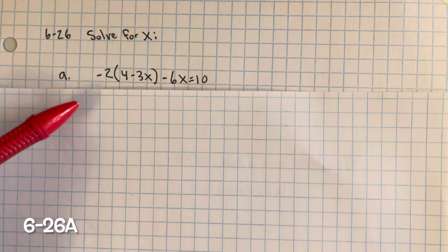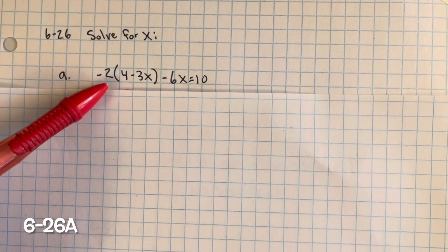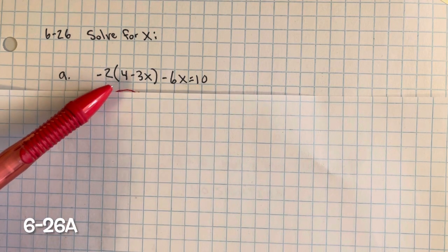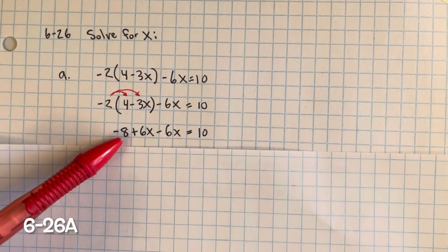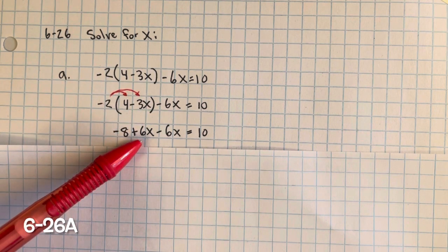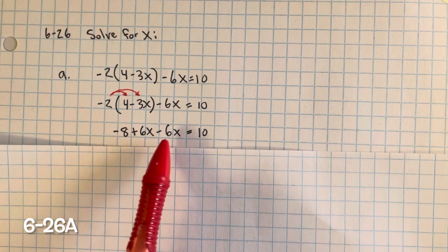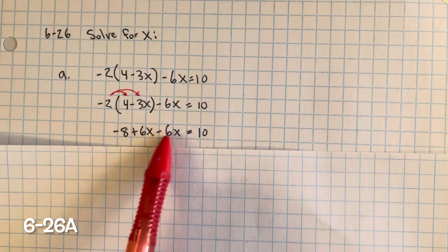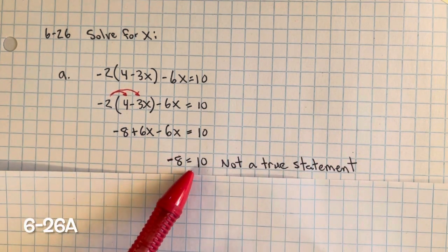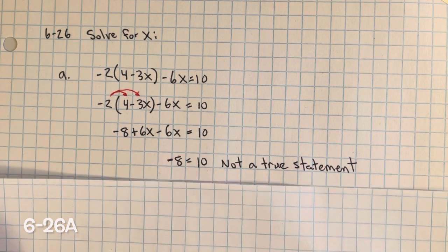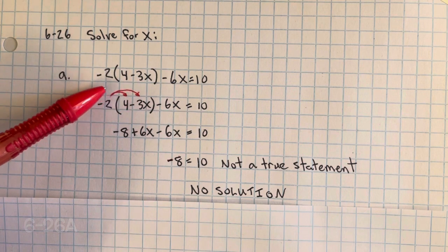Problem 626. We need to solve for x, so we need to get x by itself. Before we do that, we need to simplify this equation by following the order of operations — doing multiplication first. We need to distribute this negative 2 to both terms. Negative 2 multiplied by 4 equals negative 8. Negative 2 multiplied by negative 3x is positive 6x. Now we can see we have like terms: positive 6x and negative 6x. Combining them: 6x minus 6x equals 0, and we're left with negative 8 equals 10. That's not a true statement, so there's no solution — there's no value I can put in for x to make this equation true.